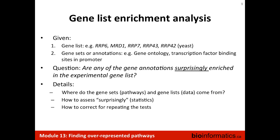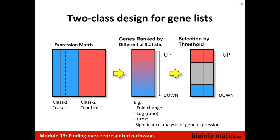The most common design that people use in omics experiments is a two-class design. You would have cases in blue and controls in red, comparing a particular set of samples to some controlled samples. You know that there will be some gene expression differences, determined with solid statistical techniques, hopefully with a good experimental design so there are no strong confounding factors. Having run through a gene expression or proteomics analysis, you can rank your genes according to how different they are between cases and controls.